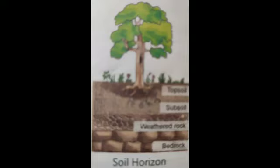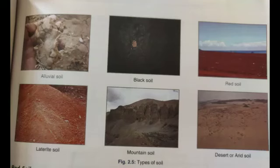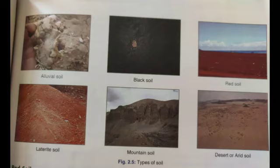Black soils are formed from the weathering of igneous rocks. They are found in the northwestern parts of the peninsular plateau, especially in the states of Maharashtra, Gujarat, Madhya Pradesh and parts of Andhra Pradesh. Cotton grows best in this soil. The next type of soil is red soil. It is derived from the weathering of igneous and metamorphic rocks. They are confined to the southern and eastern parts of the peninsular plateau. They are rich in iron compounds and appear red in color because of the presence of iron oxide.